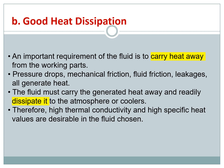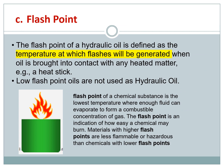The next point is the flash point. The flash point is the temperature at which flashes will be generated — simply put, it is the temperature at which fire starts when the oil is brought into contact with a heated source. We know that all three elements involved in fire must be present: oxygen, fuel, and a heated source. Having a low flash point makes it easier for all these elements to come together, so low flash point oils are not used as hydraulic oil.